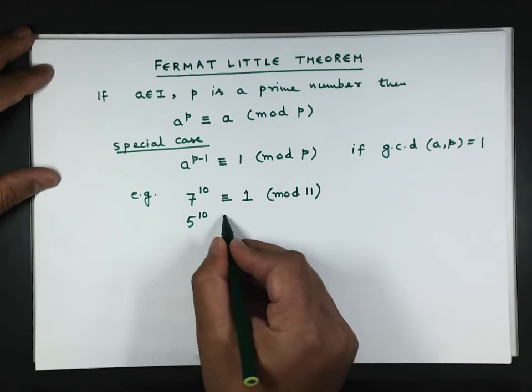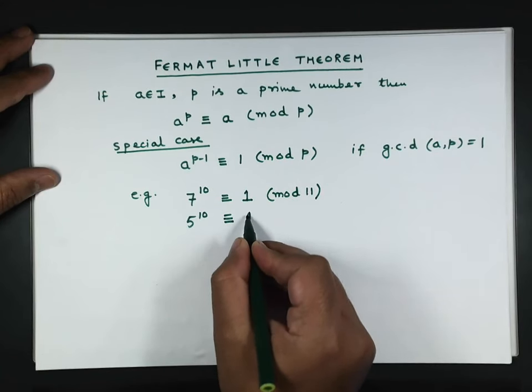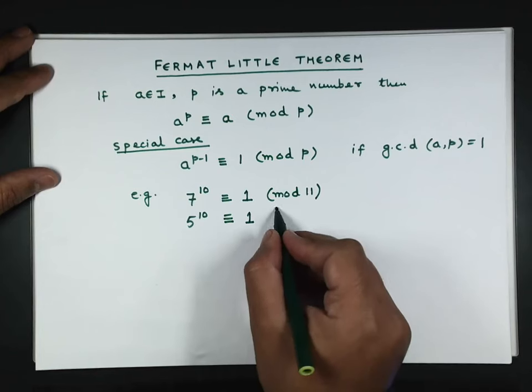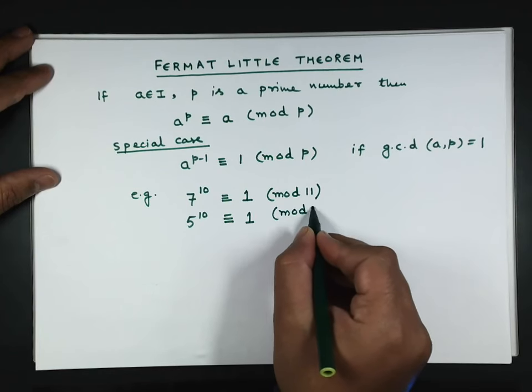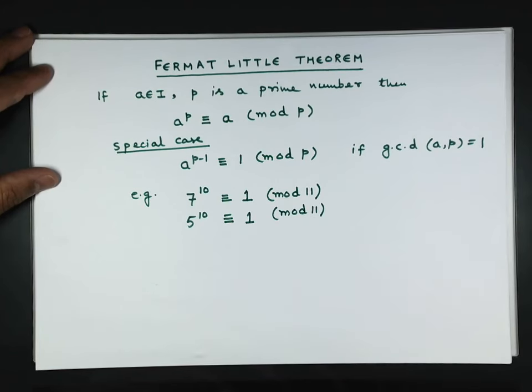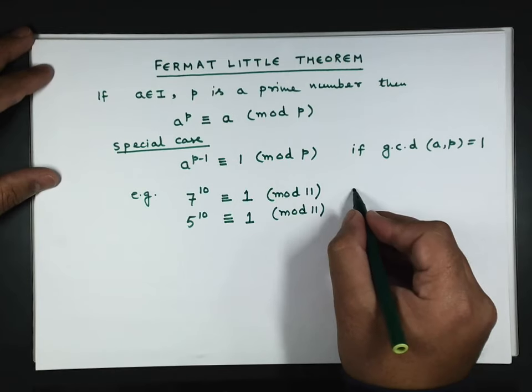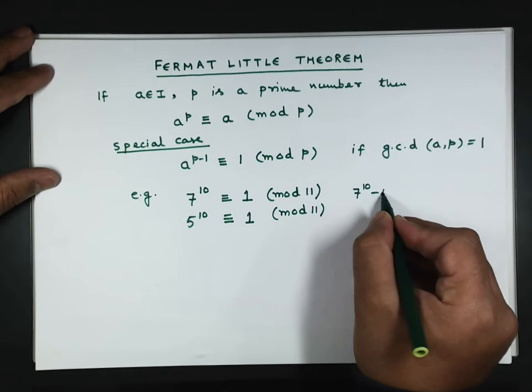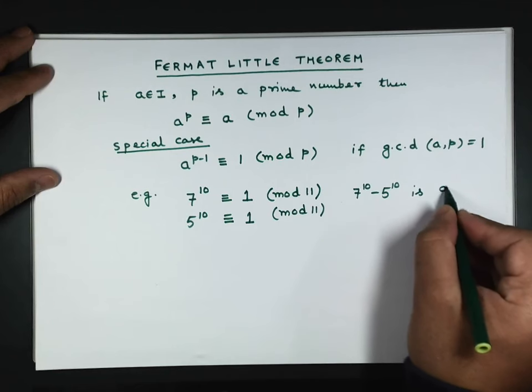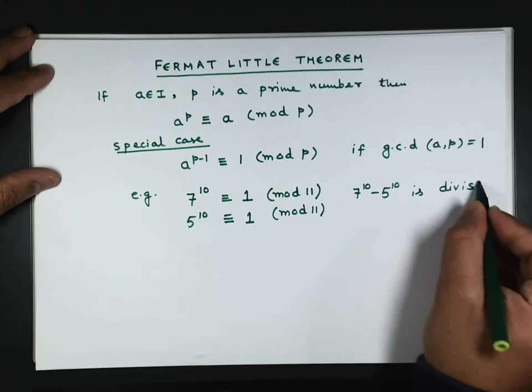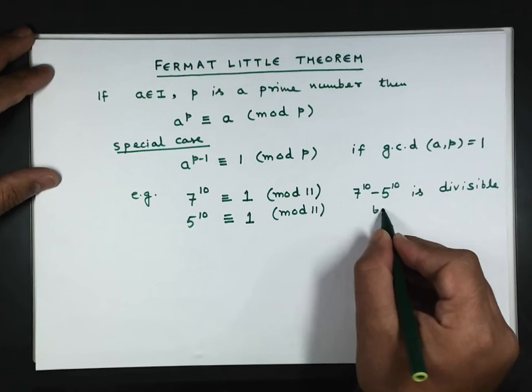Similarly, 5^10 is also 1 modulo 11. We can also say that 7^10 - 5^10 is divisible by 11.